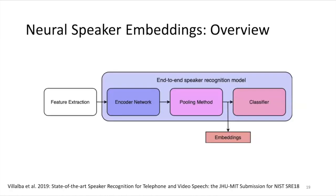Now we move on to ask: what kind of speaker embeddings for our multi-speaker TTS setup produce the best synthesis? Typically in an end-to-end speaker recognition model, there are three components: an encoder network, a pooling layer, and a classifier. An encoder transforms the input features to frame-level representations, which are typically variable length. The pooling layer pools across these variable-length frame-level representations and generates a fixed-size utterance-level representation. This utterance-level representation is used for speaker identification and is the embedding we extract for our multi-speaker Tacotron. Lastly, the classifier classifies the embeddings with different objective functions.